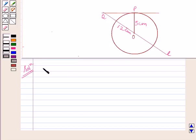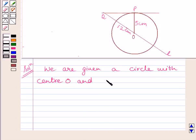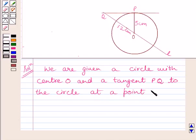So, we can write: we are given a circle with center O and a tangent PQ to the circle at a point P. Now, we are given that radius of the circle, that is OP, is equal to 5 cm, and OQ is equal to 12 cm.